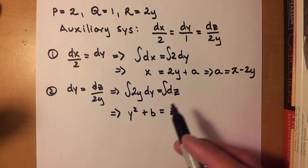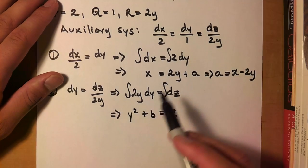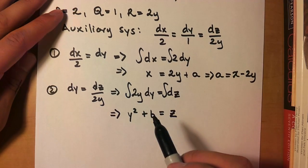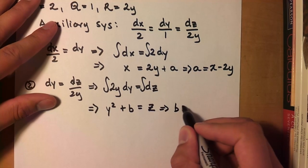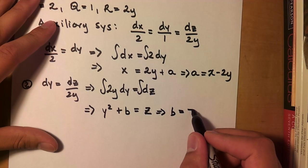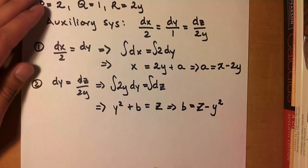And that will give us y squared plus some constant, b, b is equal to z. Alright, so I put it on this side this time. So it doesn't matter which side you put it on. And it doesn't even have to be the same variable like I did here. So that was just a coincidence, I suppose. So solve for b. b is equal to z minus y squared.